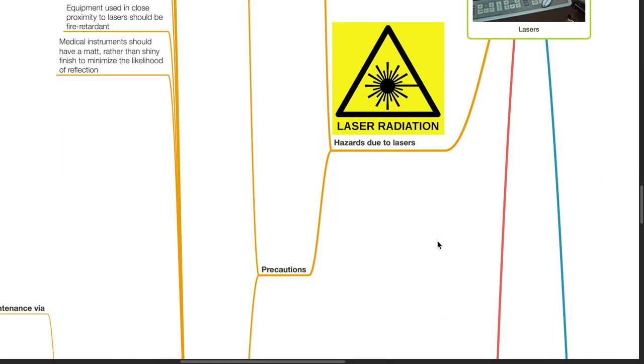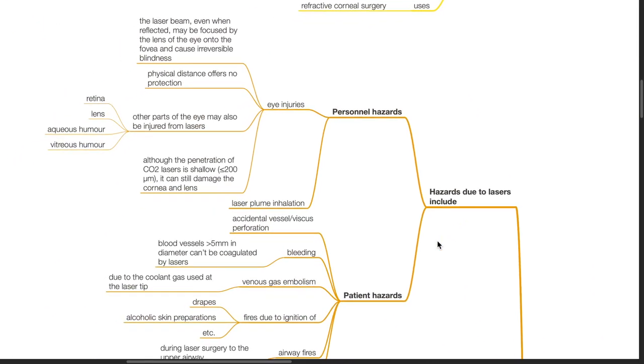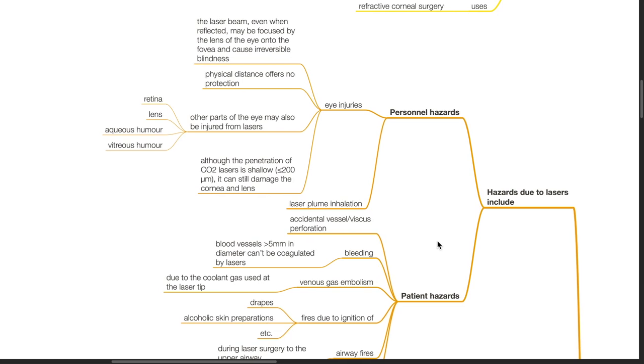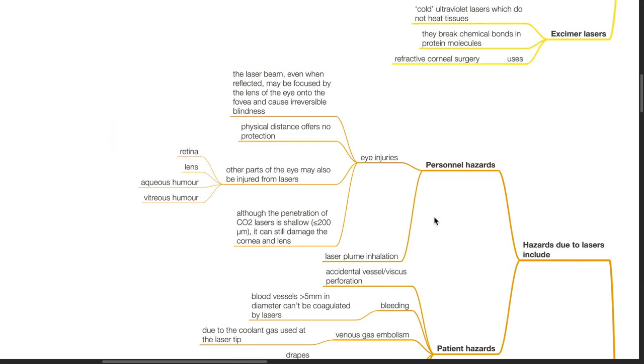Hazards due to lasers includes personal hazards and patient hazards. Healthcare workers can sustain eye injuries. The laser beam, even when reflected, may be focused by the lens of the eye onto the fovea and cause irreversible blindness. Physical distance offers no protection. Other parts of the eye may also be injured from lasers such as the retina, lens, aqueous humor and vitreous humor. Although the penetration of CO2 lasers is shallow, it can still damage the cornea and lens.